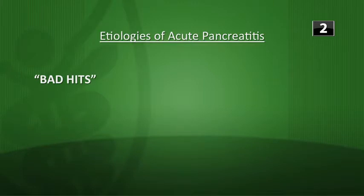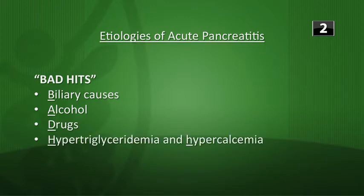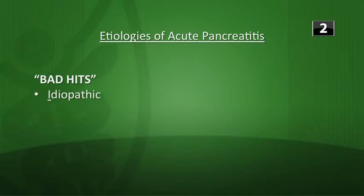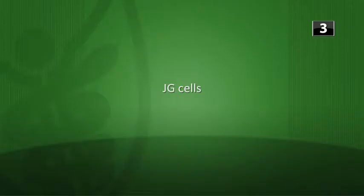Next, what are the possible etiologies of acute pancreatitis? The mnemonic 'BAD HITS' stands for: Biliary causes, Alcohol, Drugs (especially HIV drugs), Hypertriglyceridemia, Hypercalcemia, Idiopathic, Trauma (including ERCP), and Scorpion sting — which really never happens.